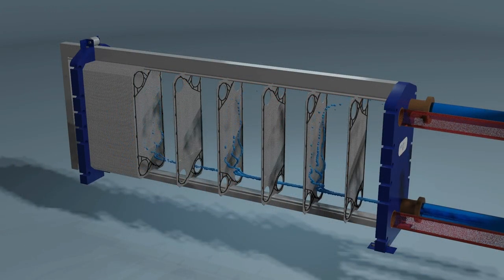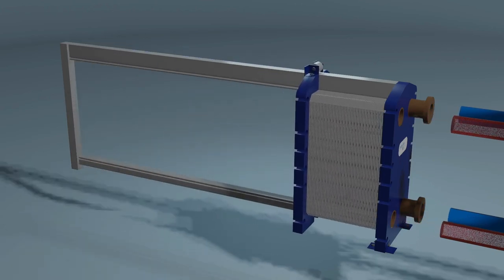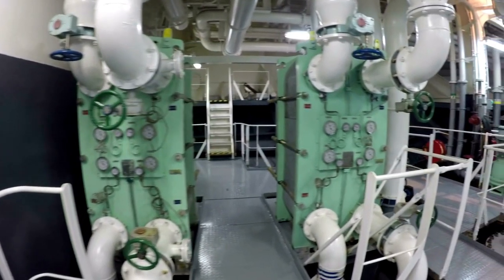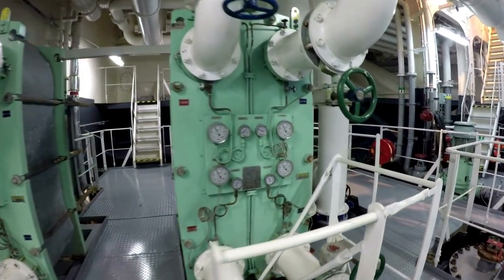A plate-type heat exchanger is a simple and efficient device used on ships to transfer heat between two fluids. Its compact size, ease of maintenance, and high heat transfer rates make it a popular choice for marine applications.